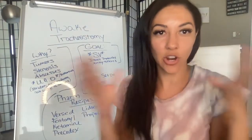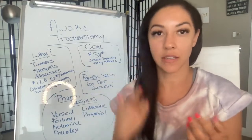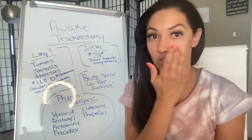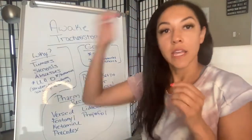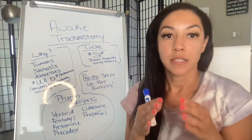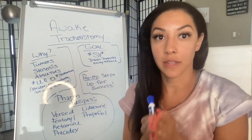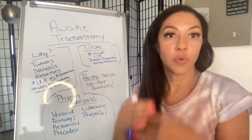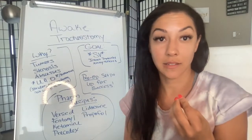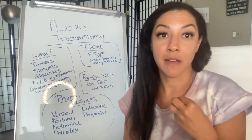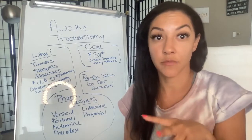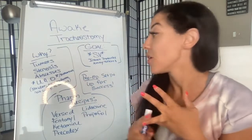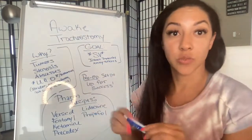Let's talk about awake tracheostomy. I'm going to give you a few pearls on how to set your patients and yourself up for success with awake trachs. The first thing is why. If patients have any type of stenosis, narrowing in the upper airway, upper airway obstructions, distortions, abscesses, tumors — especially supraglottic or subglottic tumors, or passive vocal cords — that would make regular intubation basically unsafe, super dangerous, or impossible. This is why you would do an awake tracheostomy.